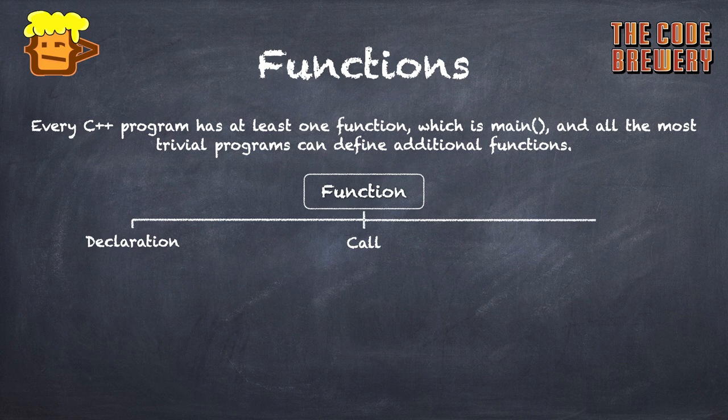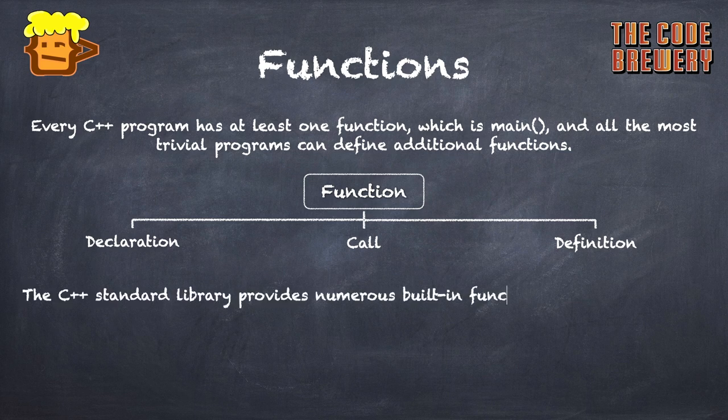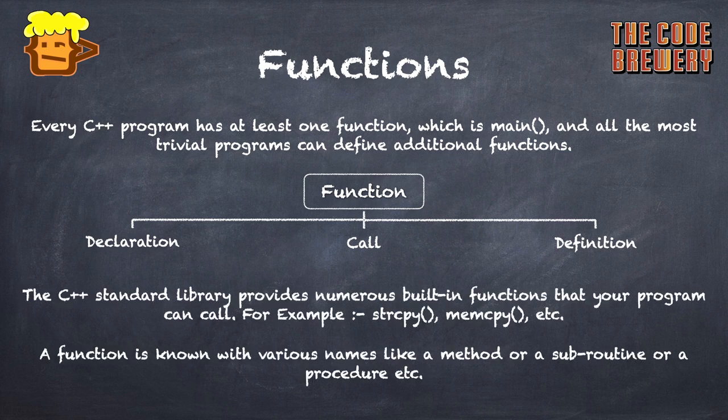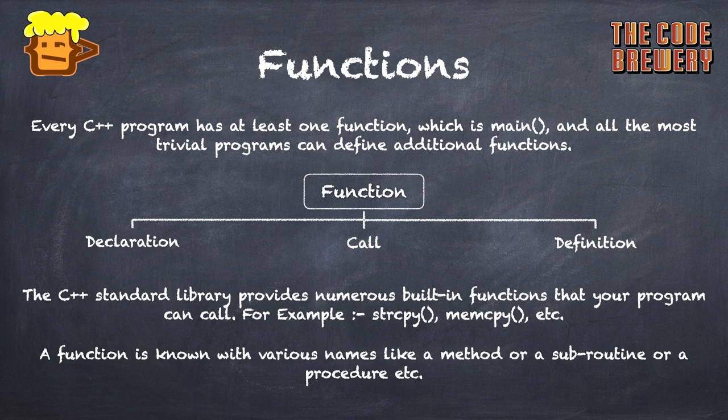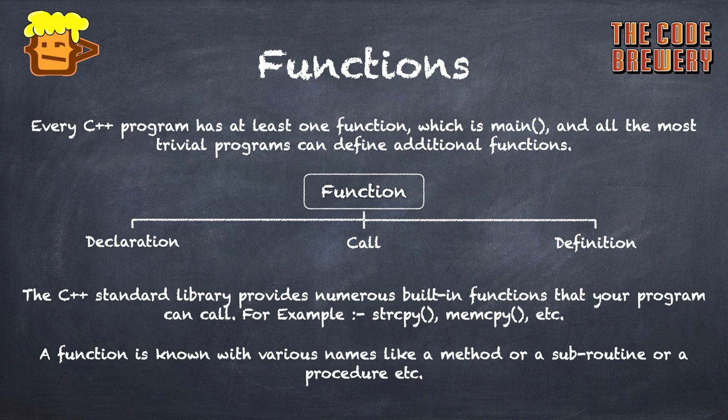Main is a function from which the program enters and exits through. It's the most important function. Now, function has three parts: declaration, call, and definition. The C++ standard library provides numerous built-in functions that your program can call, for example strcpy or string copy.